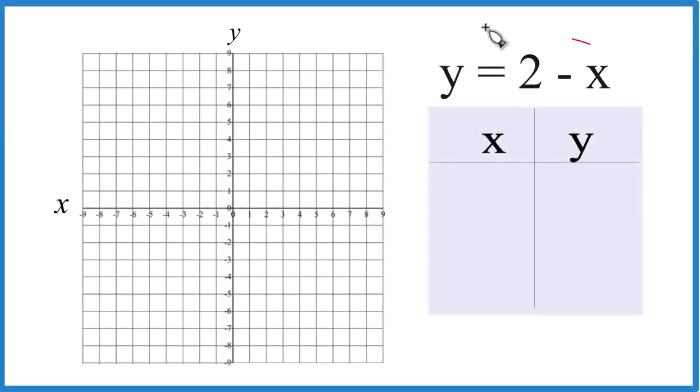Here's how you graph the equation y equals 2 minus x. We'll start out with the table of values, then we use slope-intercept form.